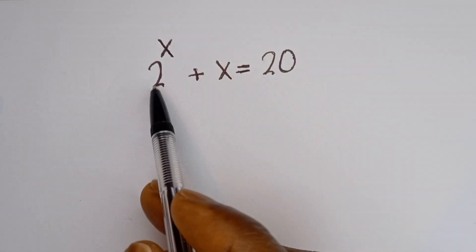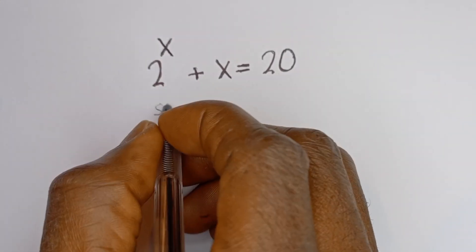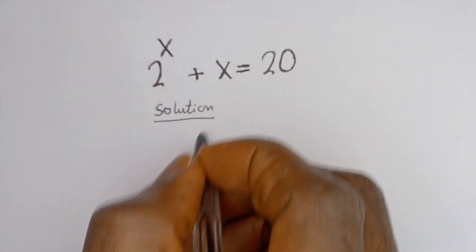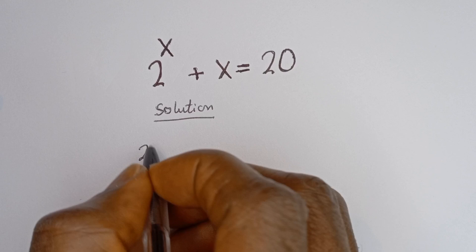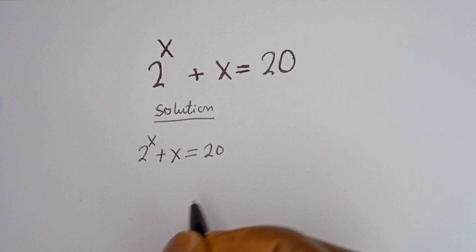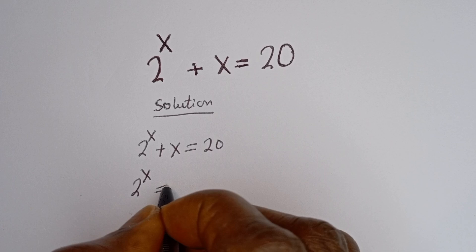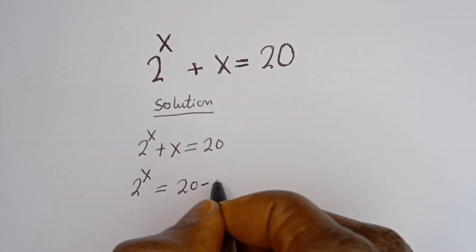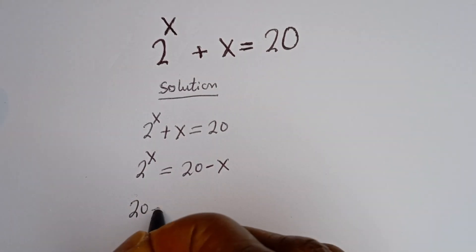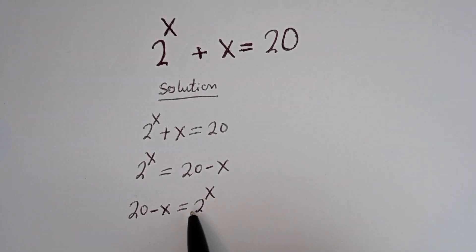Hello, how to solve for x in this equation: 2 to the power of x plus x is equal to 20. Solution: we have 2 to the power of x plus x is equal to 20. Taking the x to the other side, we have 2 to the power of x is equal to 20 minus x, which we can rewrite as 20 minus x is equal to 2 to the power of x.